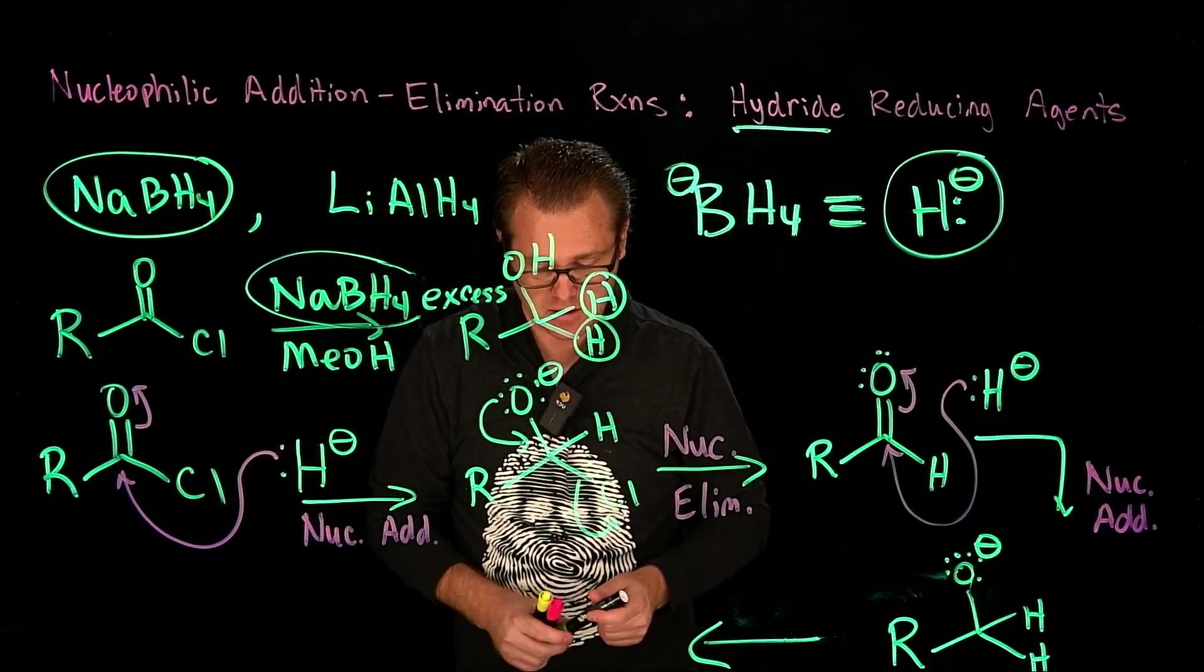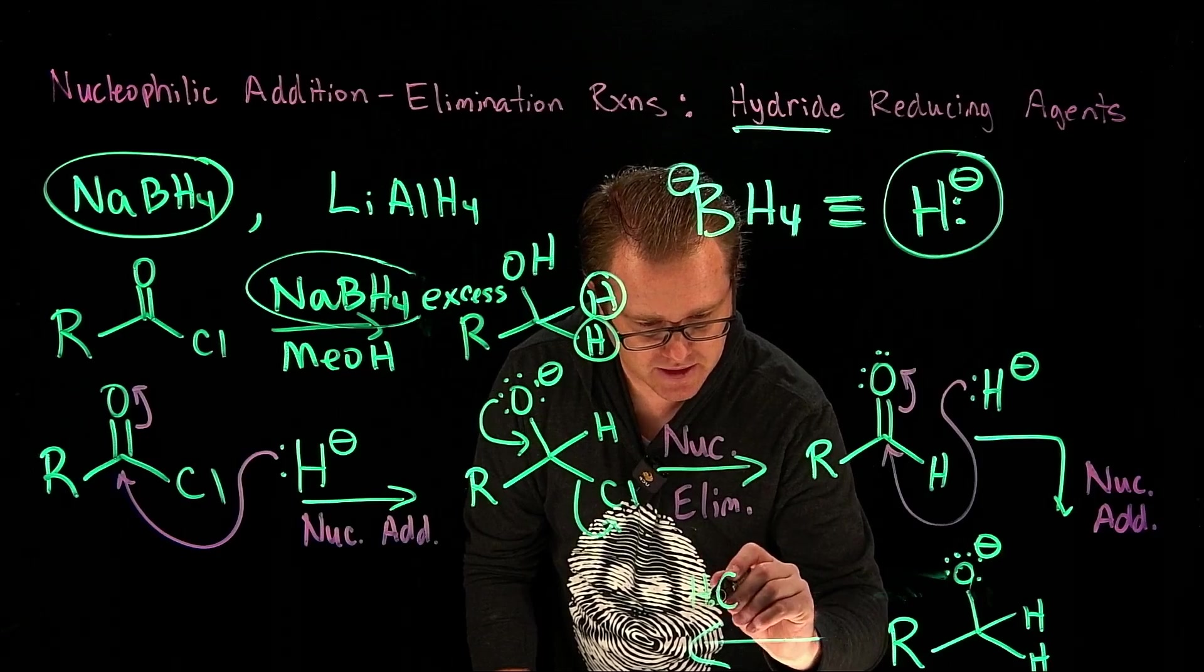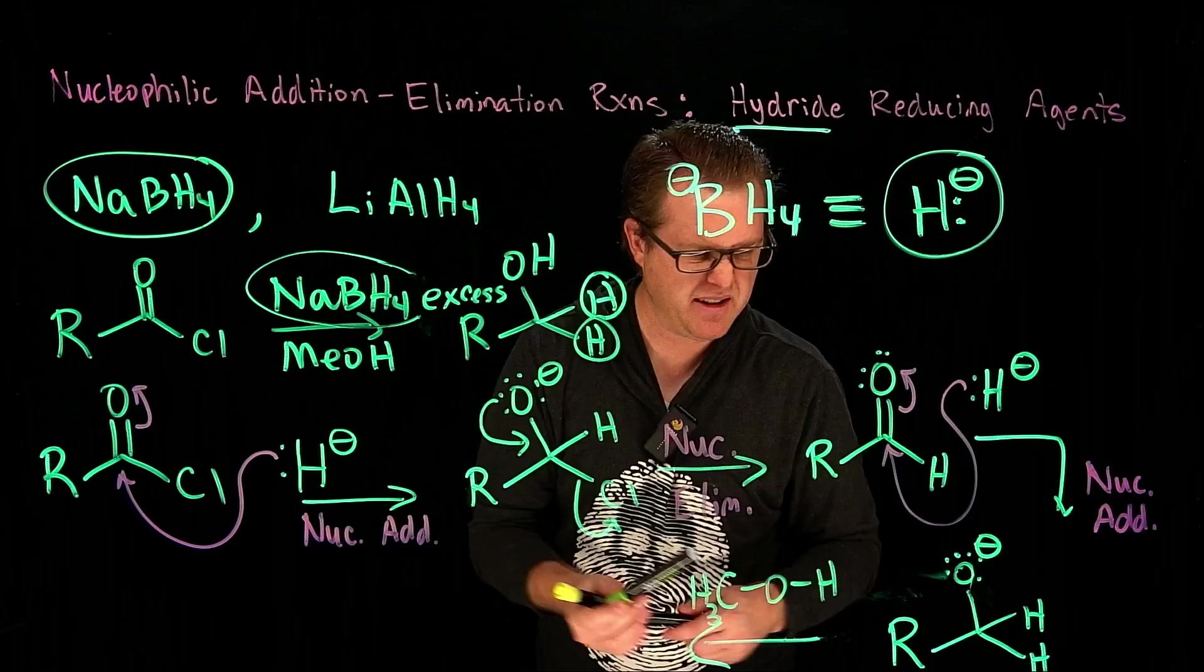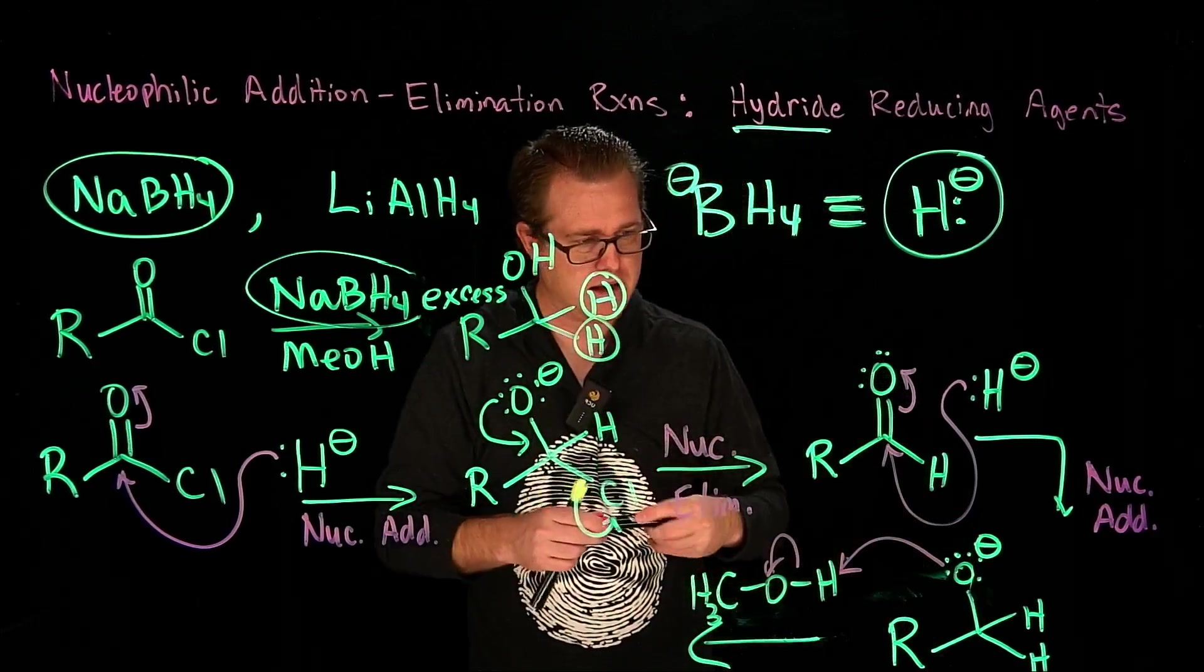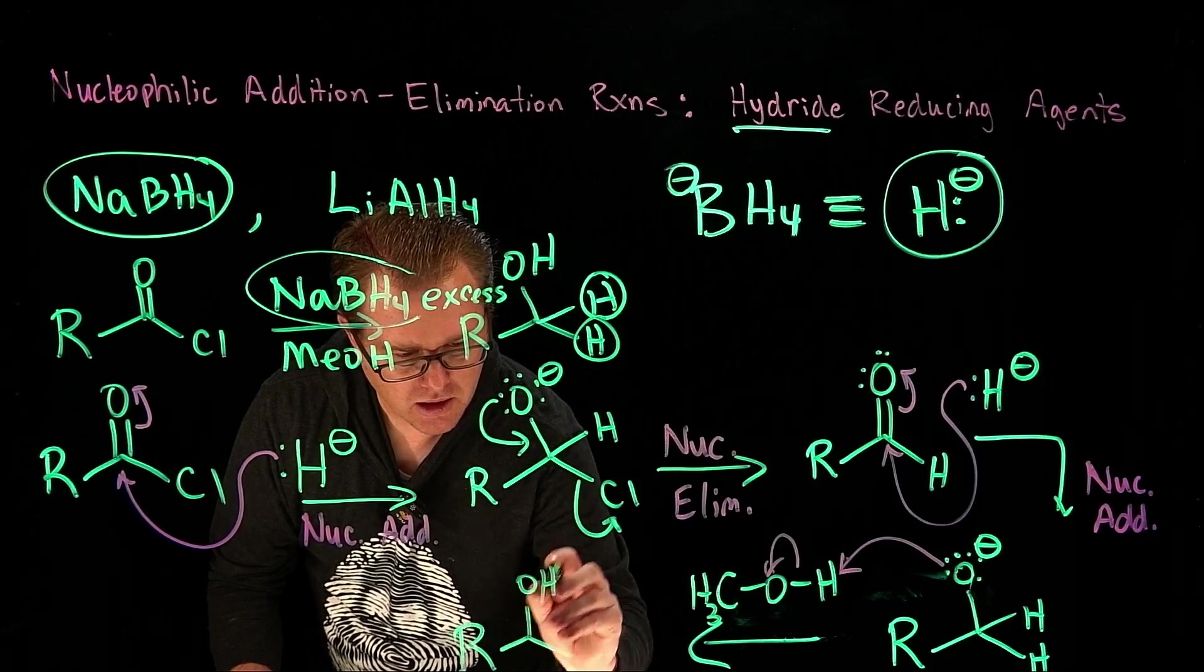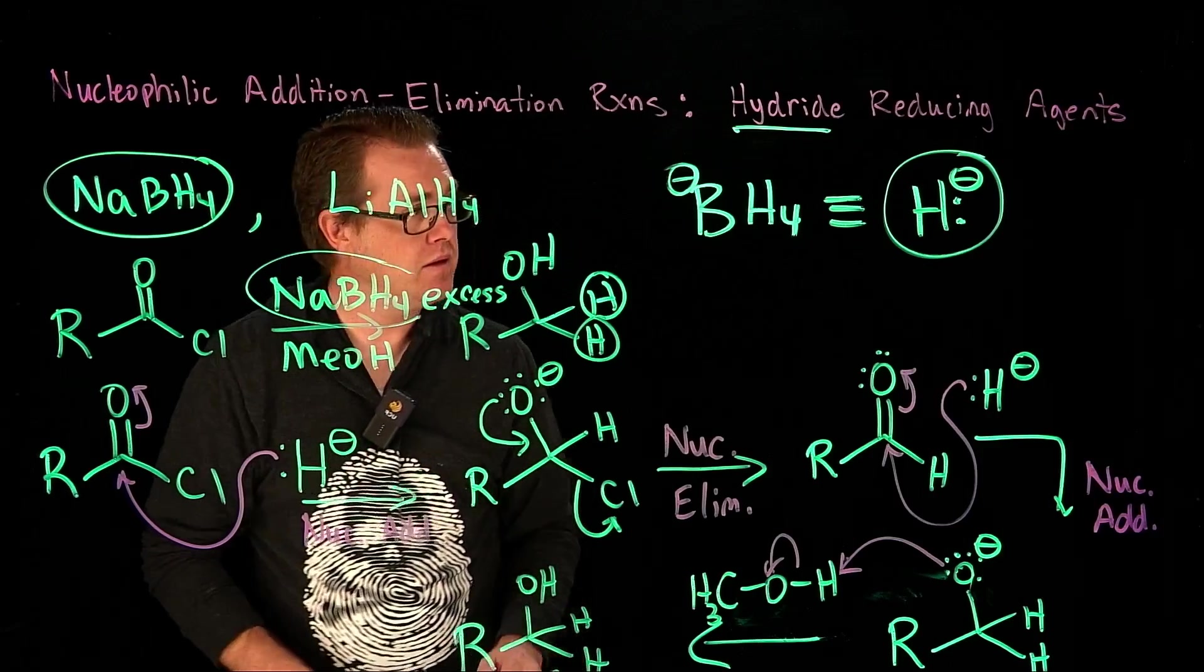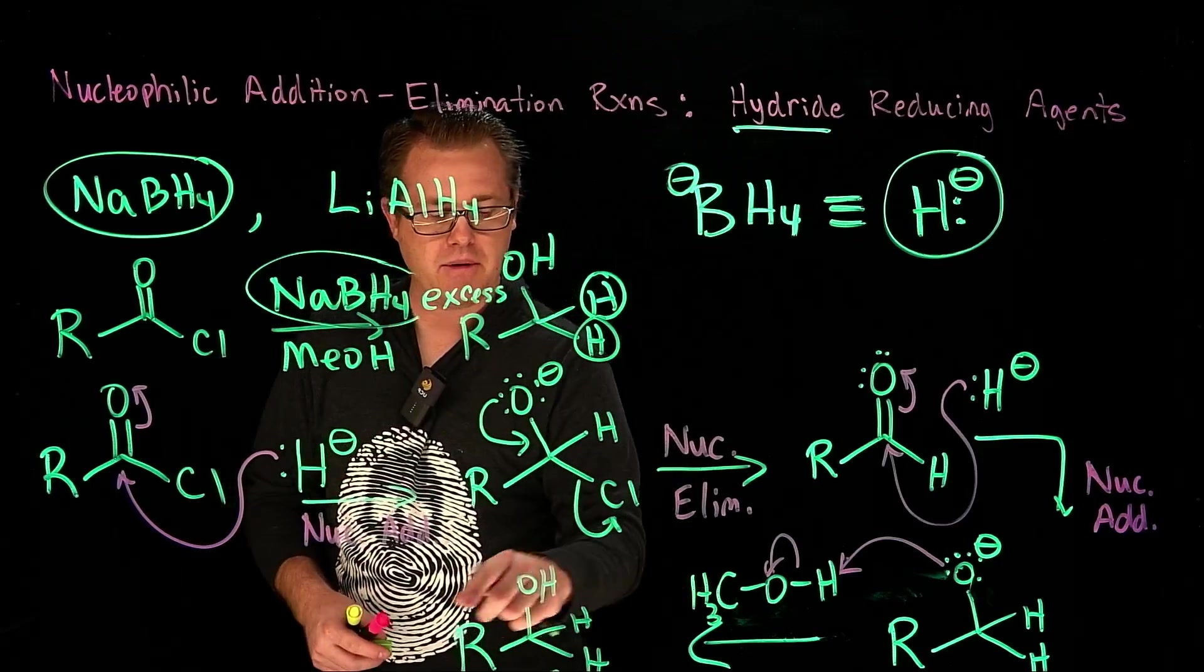So we're just going to use our methanol here, so we can represent it like this if we'd like. Just expand out that. Well, that looks a little weird, doesn't it? But that doesn't matter. Grab that proton, go like that. And then we would generate our alcohol. And in this particular case, we made a primary alcohol. So primary alcohol.